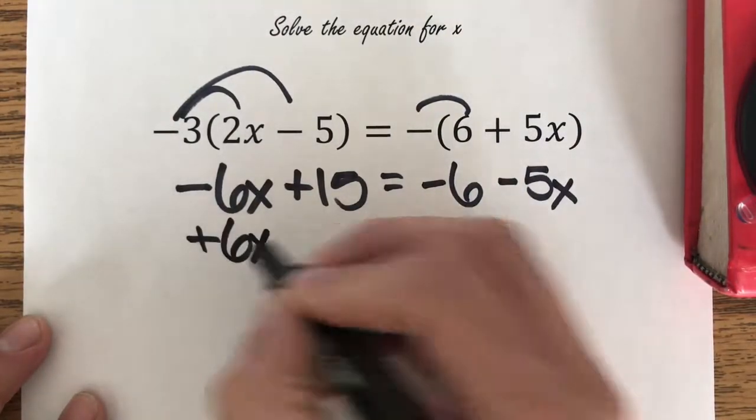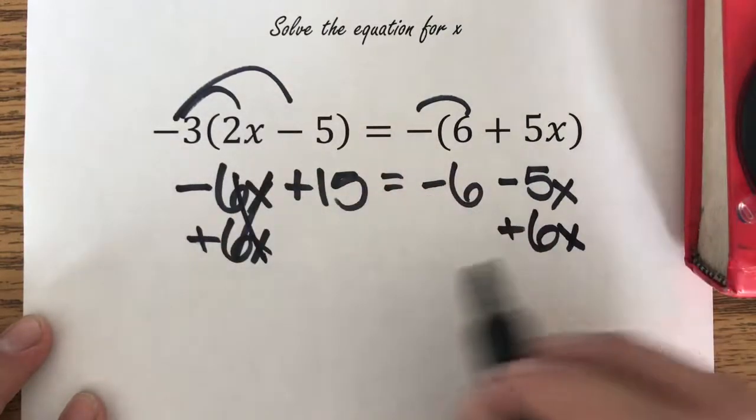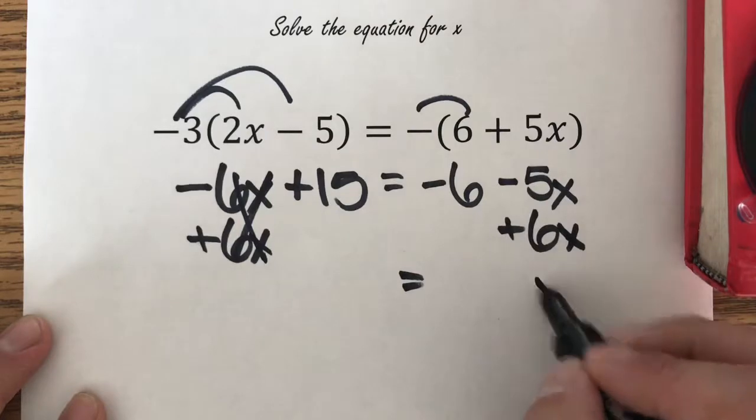I'm going to add the 6x from the left because I know by adding 6x to negative 5x right here, I'm going to get just an x.